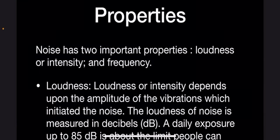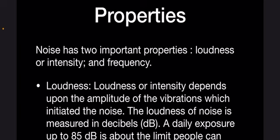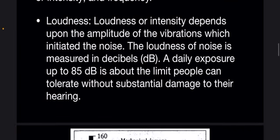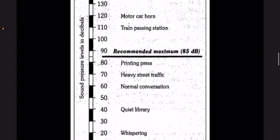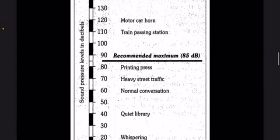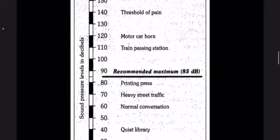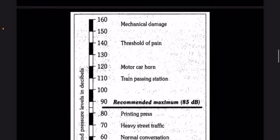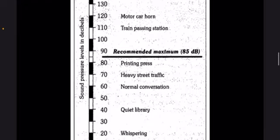Noise has two properties: loudness and frequency. First, loudness. Loudness or intensity depends upon the amplitude of the vibrations which initiated the noise. Loudness of noise is measured in decibels (dB). A daily exposure of 85 decibels is about the limit people can tolerate without substantial damage to their hearing. Here we have a picture showing the recommended maximum and the various sound pressure levels in decibels, ranging from 160 to 10.